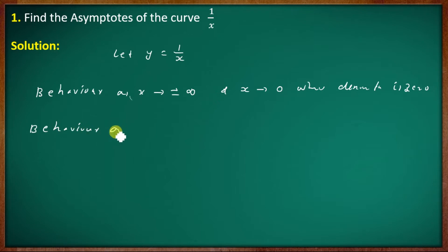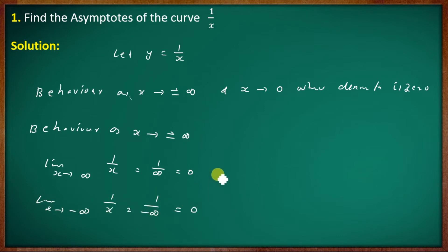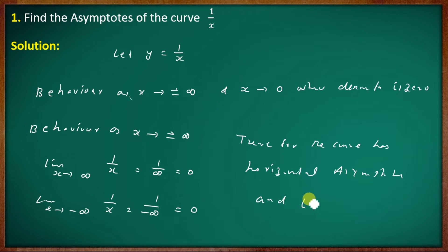As x tends to plus or minus infinity, f of x equals 1 by x tends to 0. The limit as x tends to minus infinity of 1 by x equals 1 by minus infinity equals 0. Therefore, the curve has a horizontal asymptote and it is the line y equal to 0, since b equals 0.